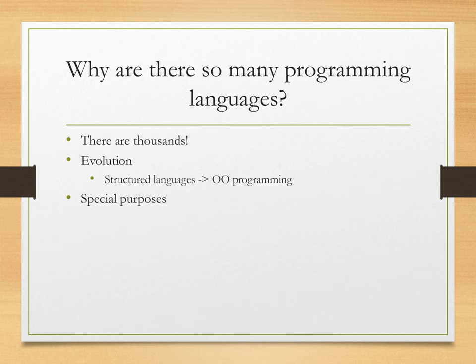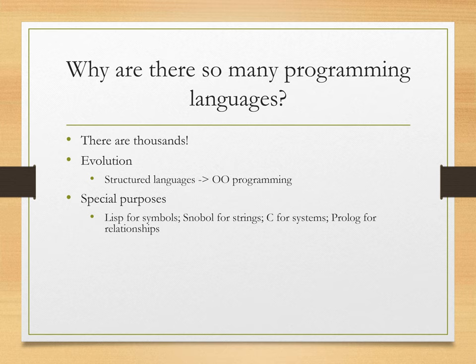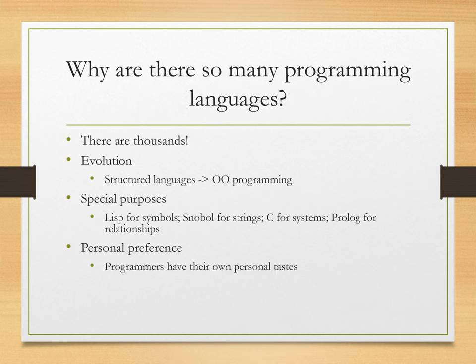Furthermore, there are special purposes for some of these programming languages. For example, you might use a language called Lisp for symbols, Snowball for strings, C for systems, and Prolog for interrelationships. You can see we have four different languages being used on potentially just one program, and each is serving a specific purpose for which it is good. Personal preference is also a factor — you just might like using one programming language over another, and programmers always have their own personal tastes.